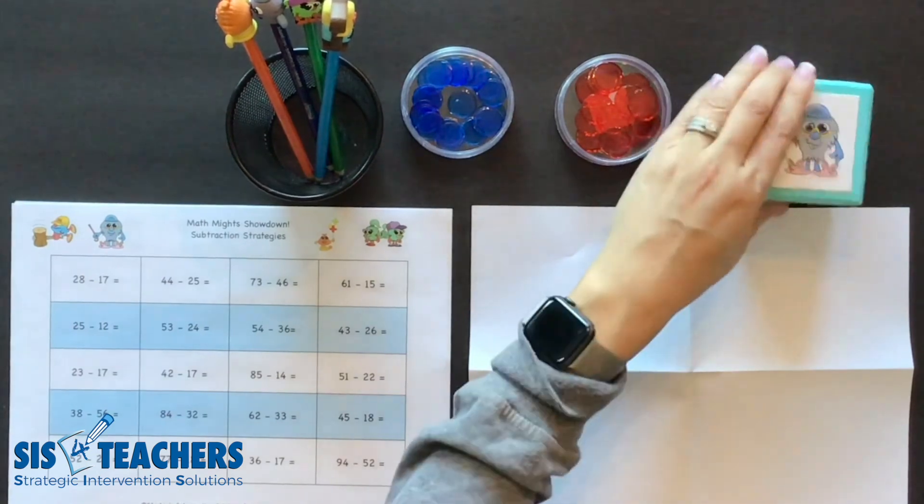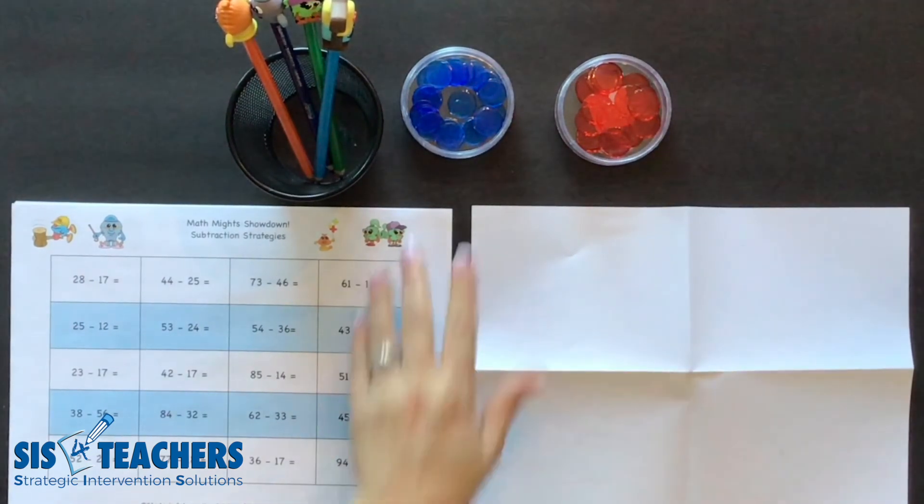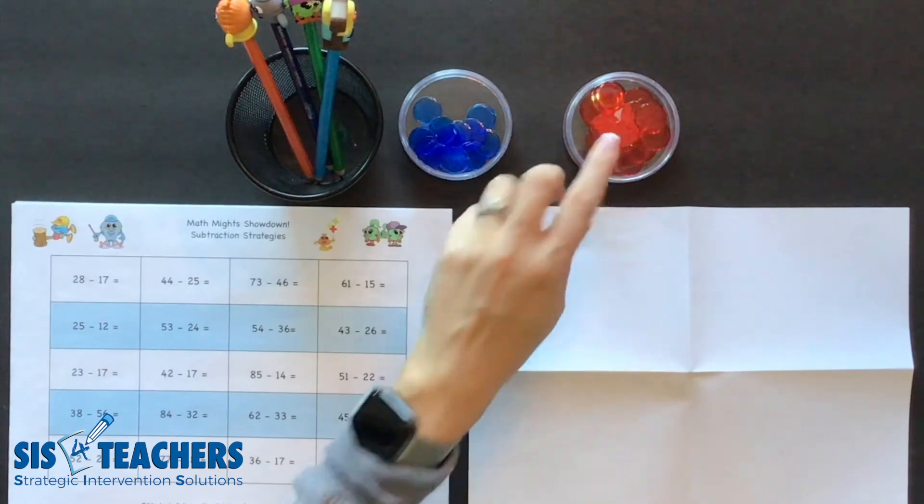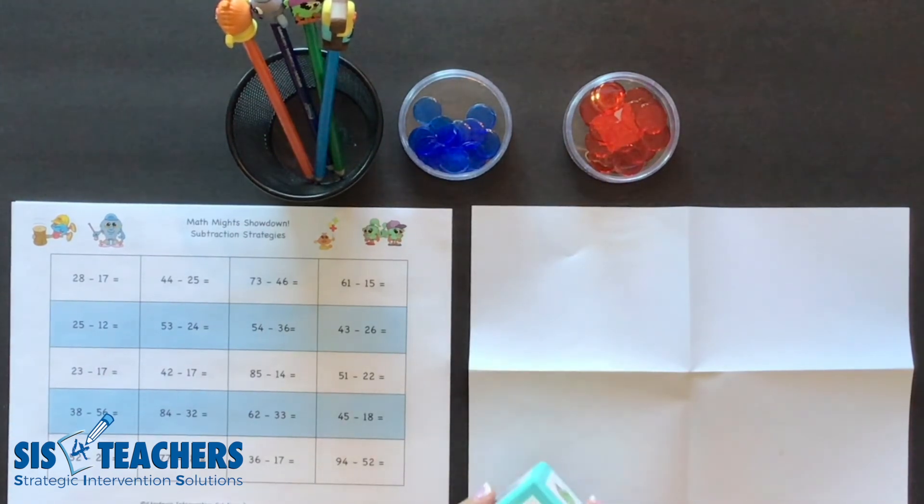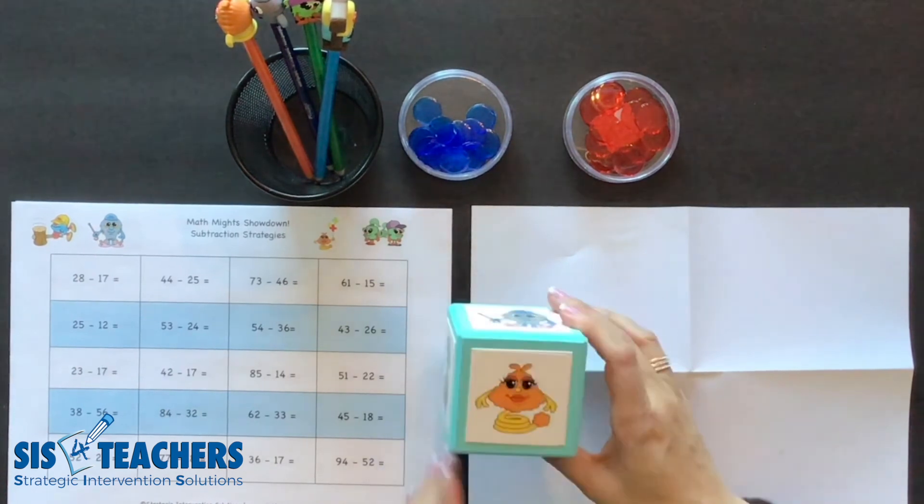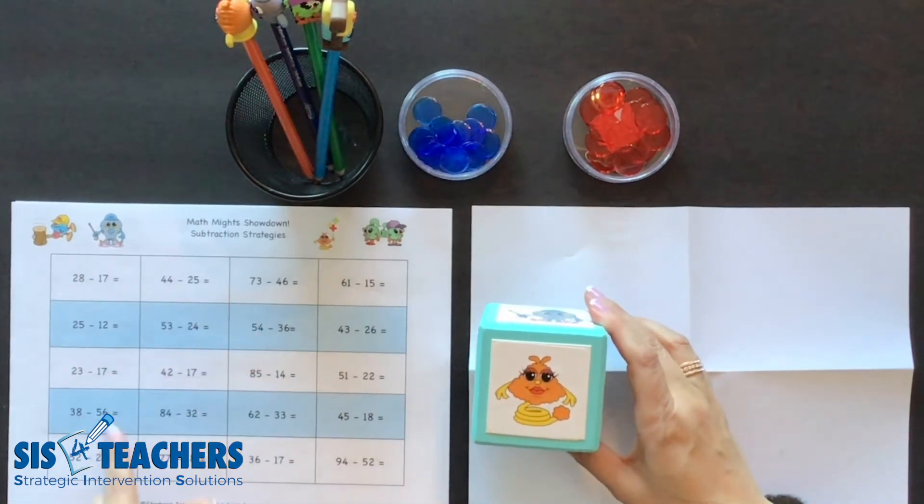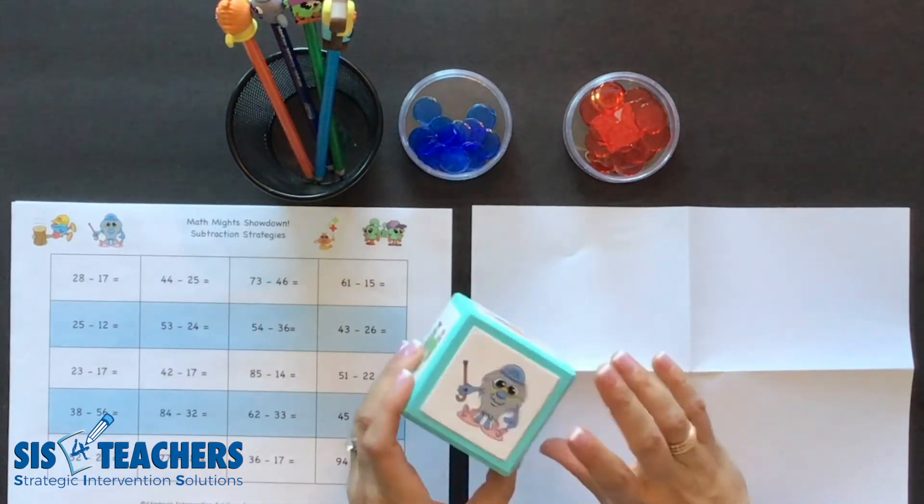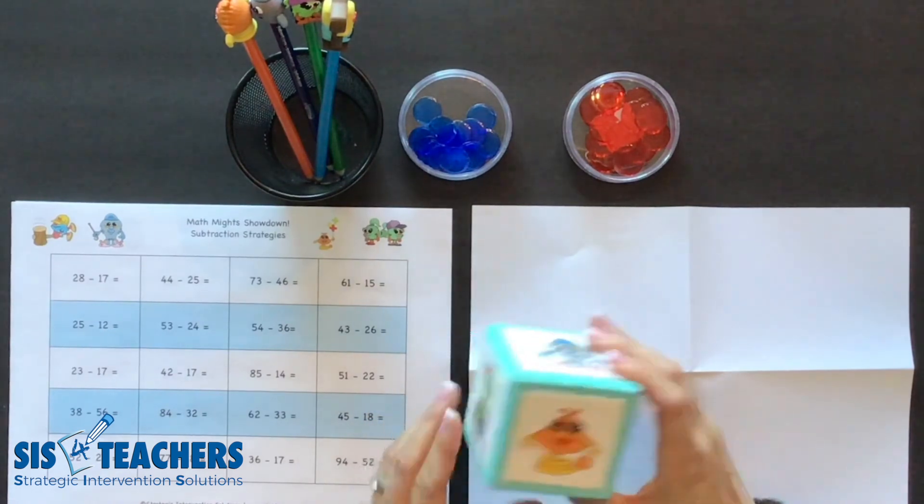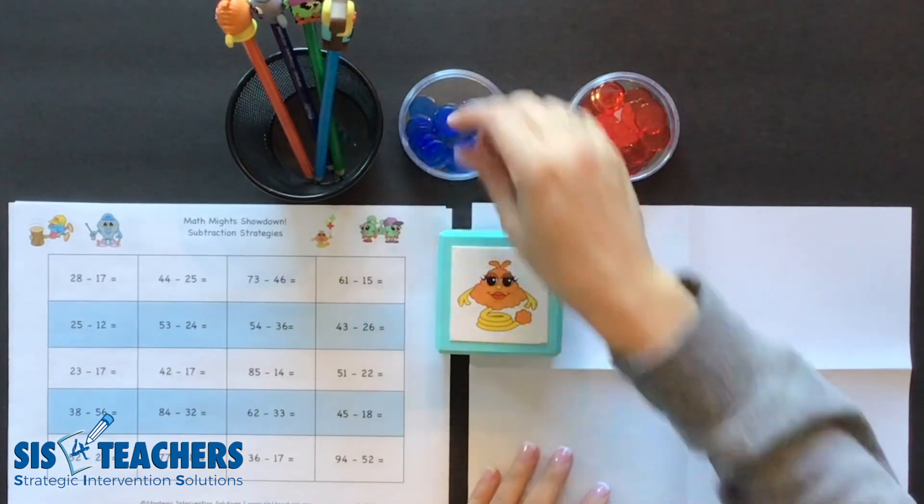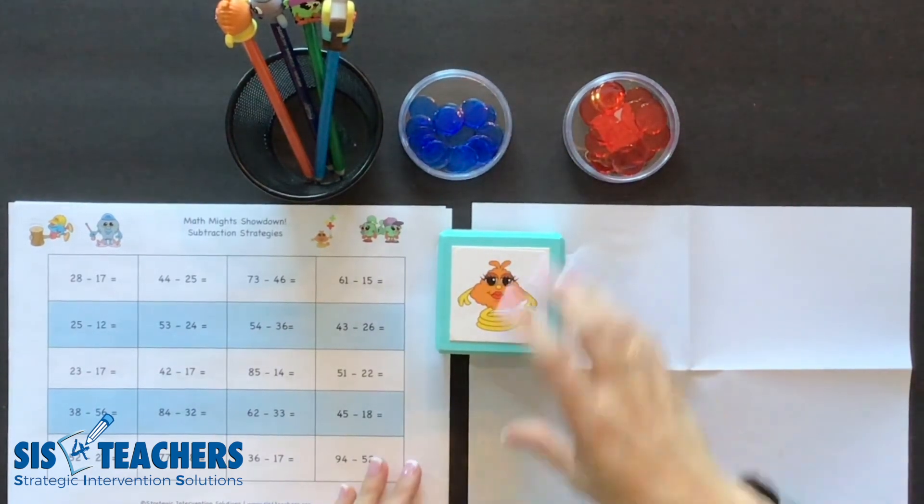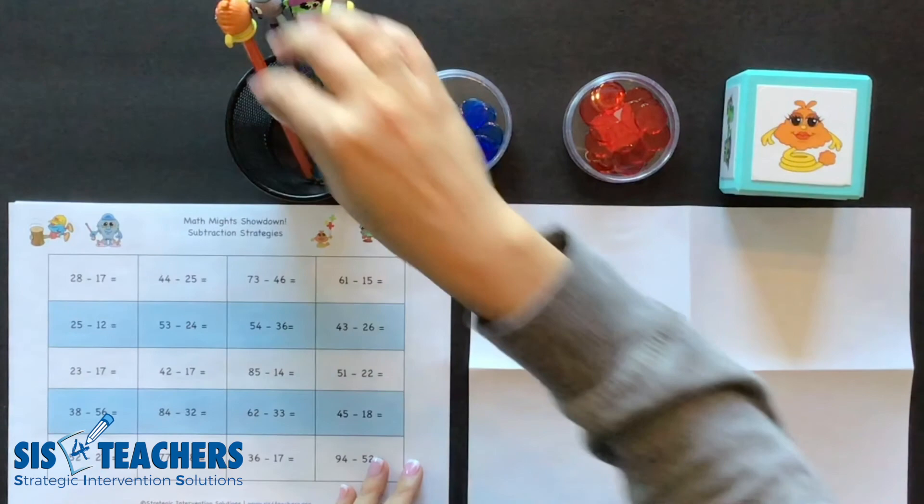We're going to start off with rolling the die, and we're going to have one person be blue and one person be red. When we decide which problem we want to, after we roll the die and we get the character selected, the child can decide which problem they want to use that might lend themselves to the strategy. So I'm going to go ahead and roll and pretend that Springling came up.